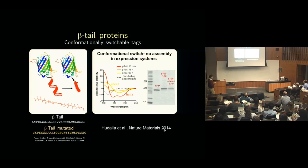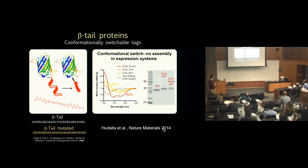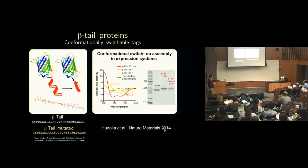In the beta tail system, the tail is appended onto any expressed protein. Inside E. coli during expression and purification it remains in a monomeric state by being in an alpha helix. That can be shifted into a beta sheet conformation, allowing the protein with the tag to be entrapped into the nanofibers. This is quite quantitative. We also made a mutated version with glycines and prolines to disrupt the folding as a comparison.